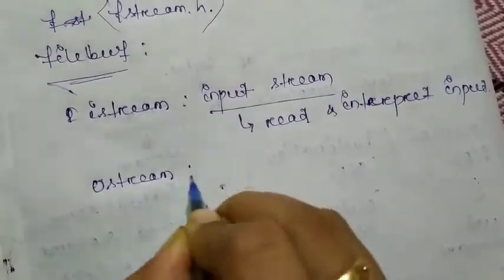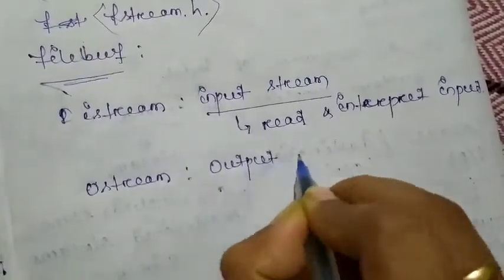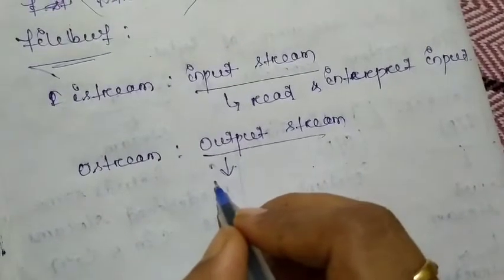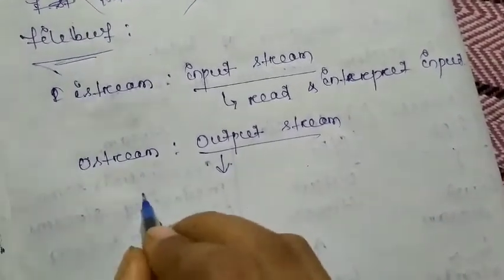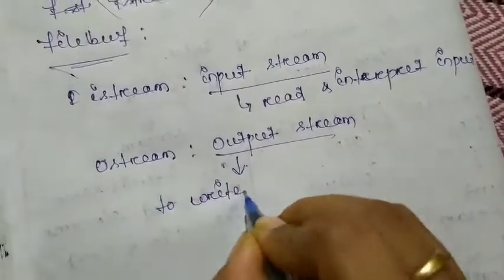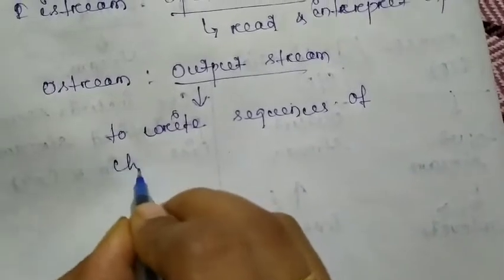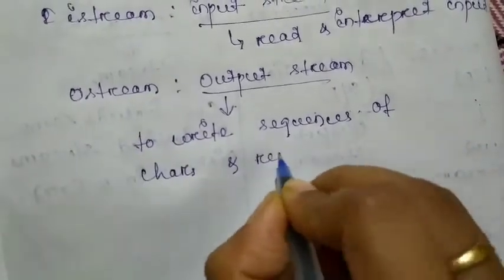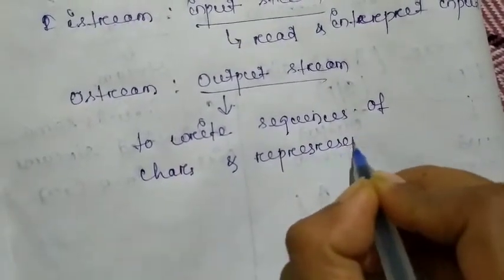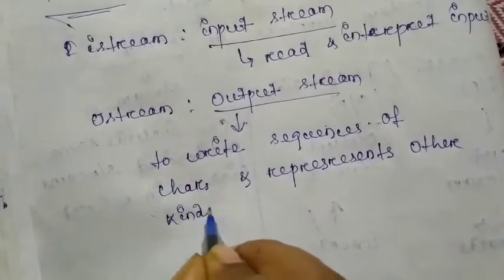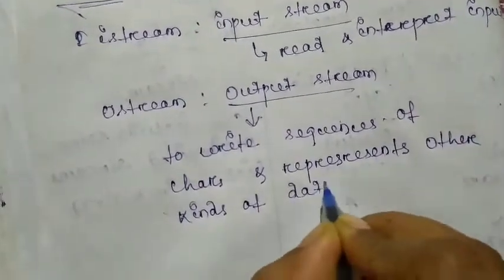Next is ostream — ostream stands for output stream. This output stream is used to write characters and represents other kinds of data.